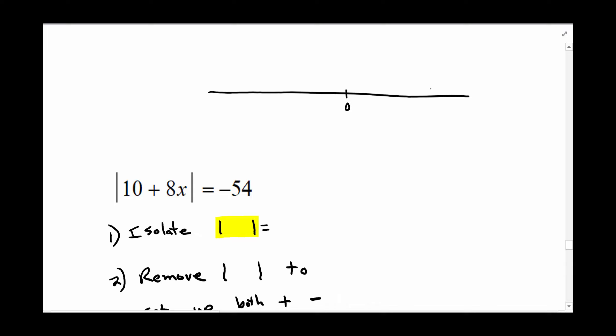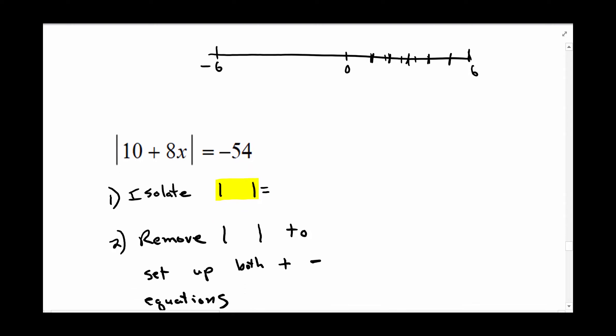So if we have the absolute value of x is equal to 6, well, you can go six spaces this way or you can go six spaces this direction. So you would have to remove the absolute value signs and set x equal to 6 and x equal to negative 6. So you're going to remove the absolute value bars to set up both a positive and negative equation.